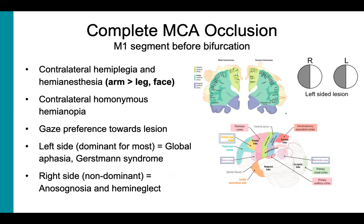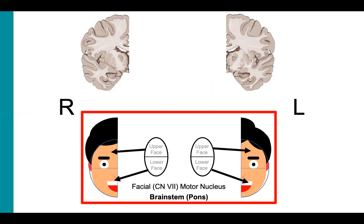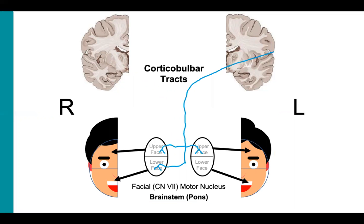And now a quick note on facial innervation. Here we have the right side of the brain and the left side. Cortical bulbar tracts are upper motor neurons that descend from the cortex and innervate lower motor neurons that reside in cranial nuclei of the brainstem, one of which is the facial motor nucleus of cranial nerve 7 found in the pons. It contains cell bodies of lower motor neurons that then go on to innervate the muscles of the face. The facial motor nucleus has an upper half whose neurons innervate the upper face, and a lower half whose neurons innervate the lower face. In blue are the cortical bulbar tracts that originate in the left hemisphere. They are upper motor neurons that descend from the cortex down to the brainstem where they synapse on both the ipsilateral and contralateral upper half of each facial motor nucleus. And for the lower facial motor nucleus, they only send fibers to the contralateral side.